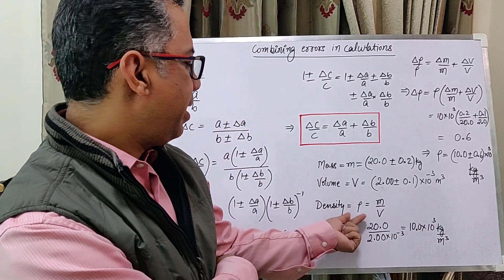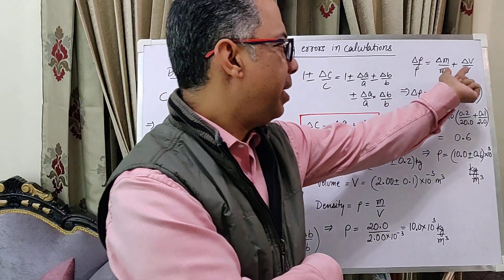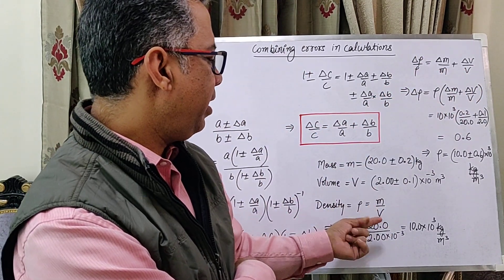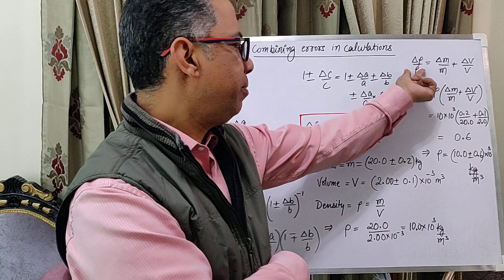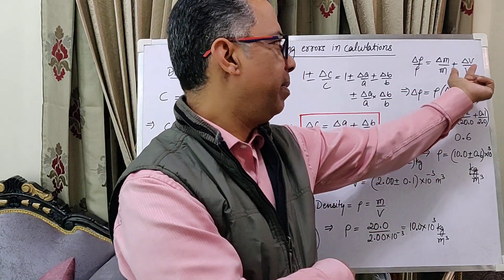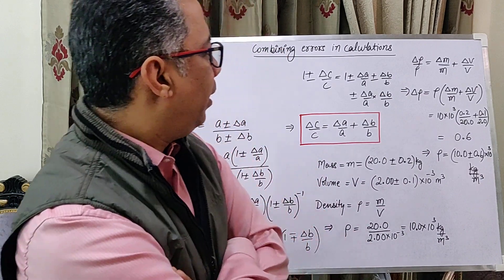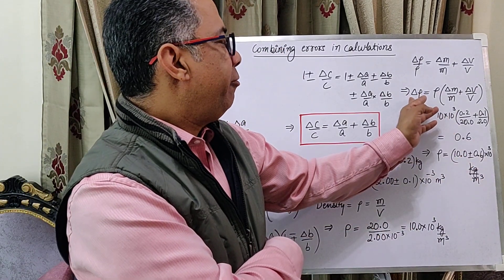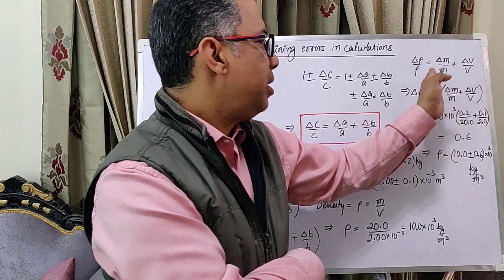The error in density will be given by this result. We have a division of M and V. So, delta rho by rho equals delta M by M plus delta V by V. Delta rho, therefore, is equal to rho times this quantity.